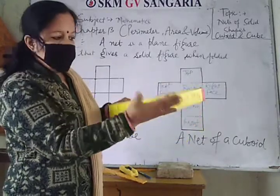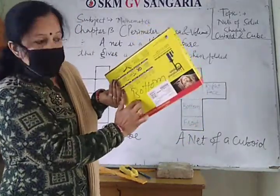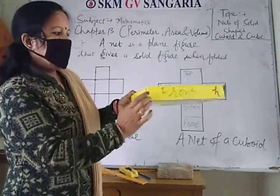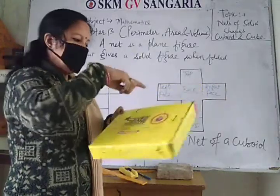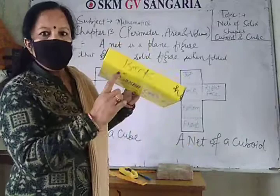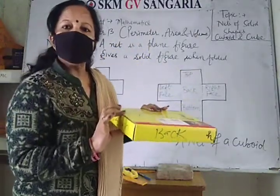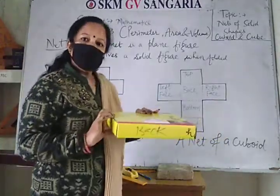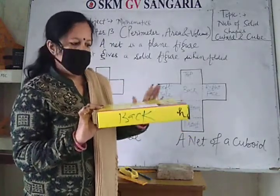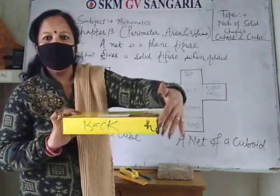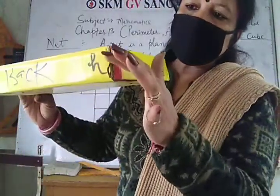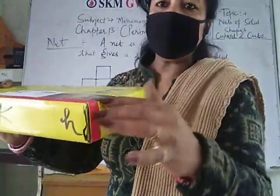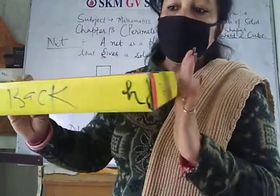How many faces does a cuboid have? Face 1: top. Bottom. Right face. Left face. Front and back. Total, how many faces does a cuboid have? It has 6 faces. This is a 3D shape with length, breadth, and height.